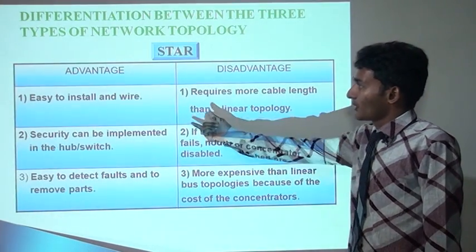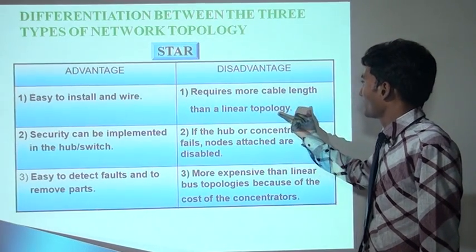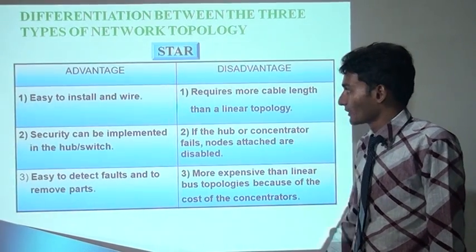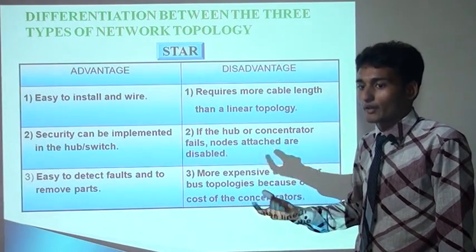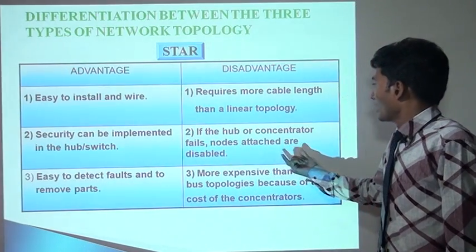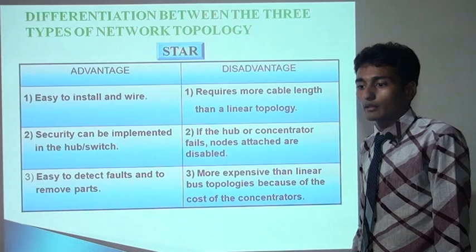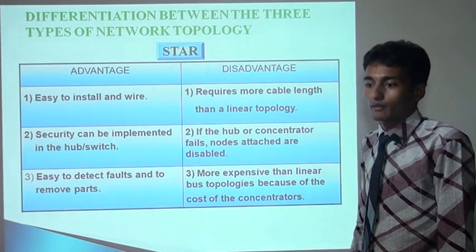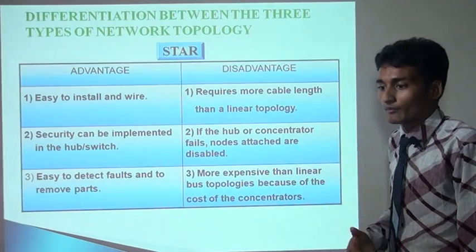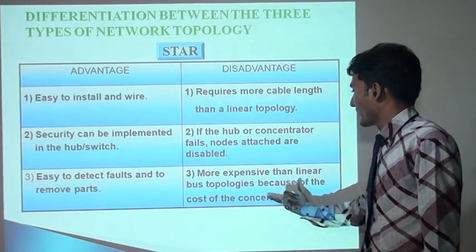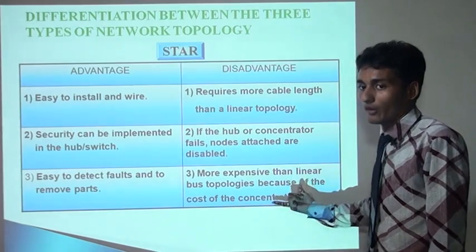In ring topology, the basic advantage is that data is quickly transmitted from one end to another. However, data packages must pass through every computer, which poses a risk to data privacy. Transmission of data is relatively simple as packages travel in one direction. If any node fails, the entire network breaks down and we cannot transmit data. It is also difficult to troubleshoot the ring and find where the problem has arisen.